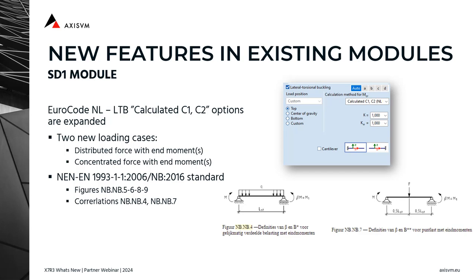The second new feature of SD1 was implemented following requests from partners from the Netherlands and affects only the Dutch Eurocode. For the lateral torsional buckling check, the Dutch National Annex provides a special method to calculate C1 and C2 coefficient values. Based on pre-described structural and load patterns in the National Annex, AXISVM tries to calculate the factors accordingly. If there are no matching patterns, conservative C values are used for the LTB calculation. X7R3 extends the list of recognized patterns with two new options for the Dutch National Annex: distributed force with end moments, and concentrated force with end moments.